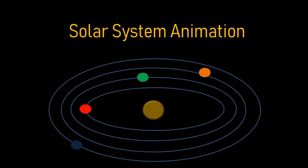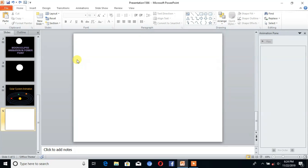Hello friends, welcome to Tech Cat. Today we will discuss how to make a solar system animation in PowerPoint. Without wasting time, let's start the topic. Firstly, you have to open PowerPoint and take a new slide.